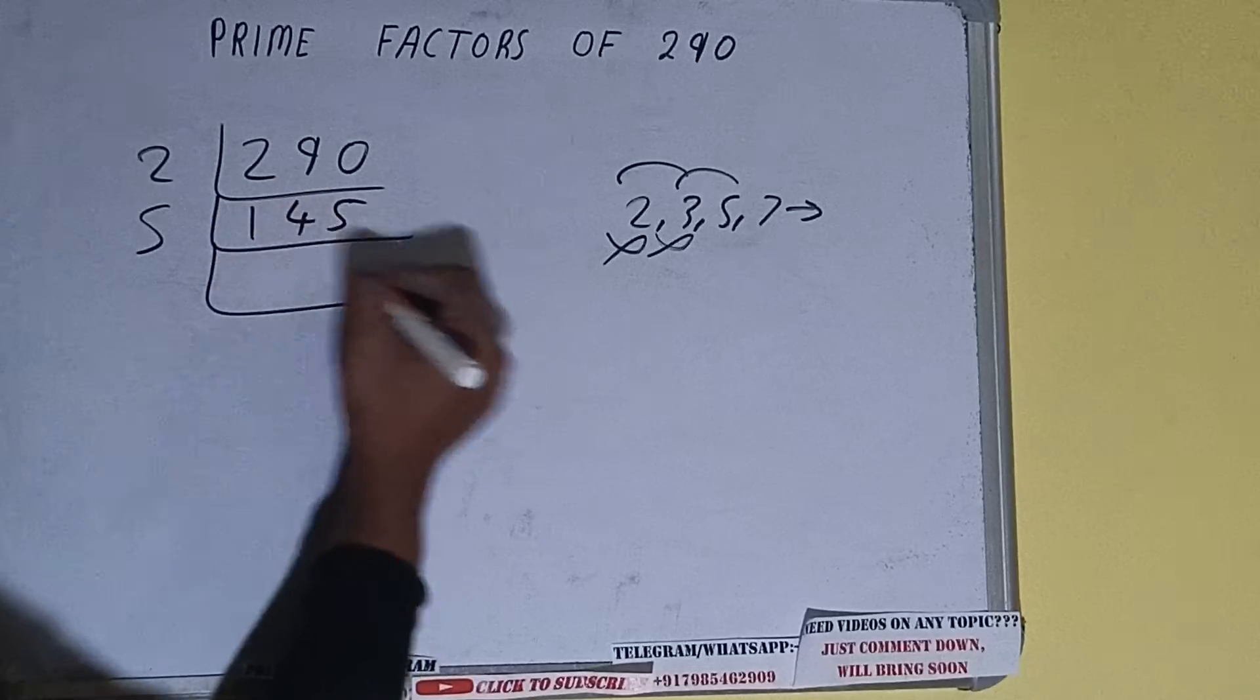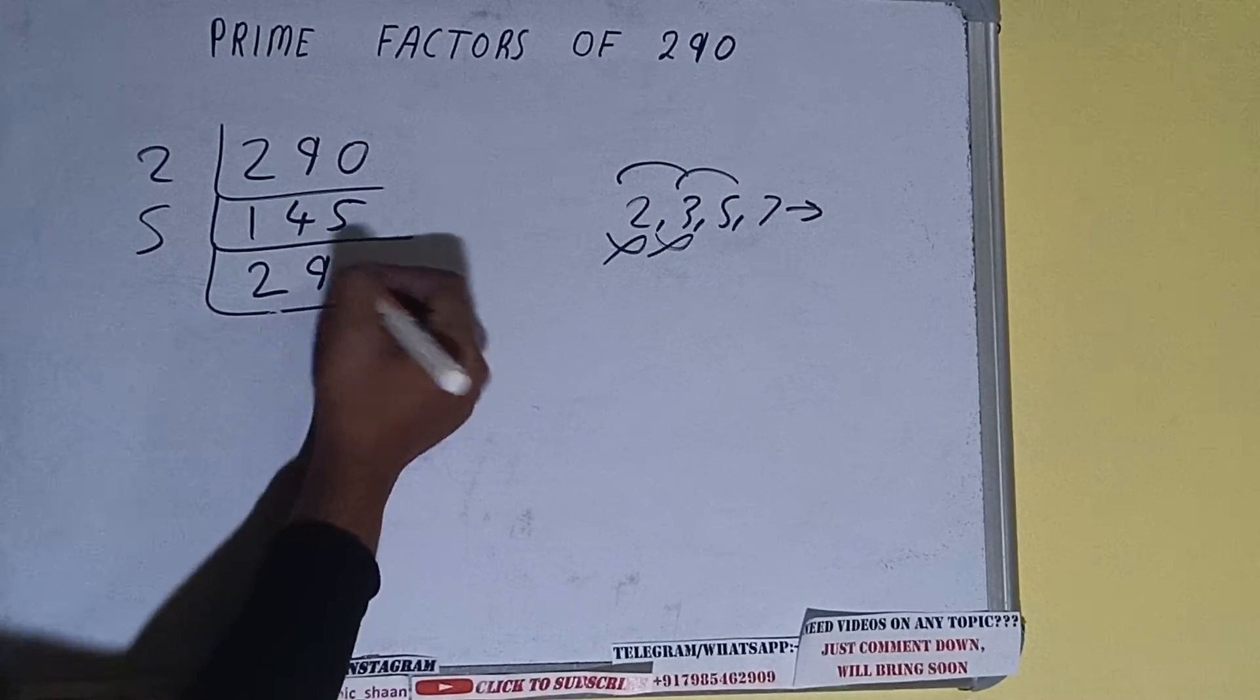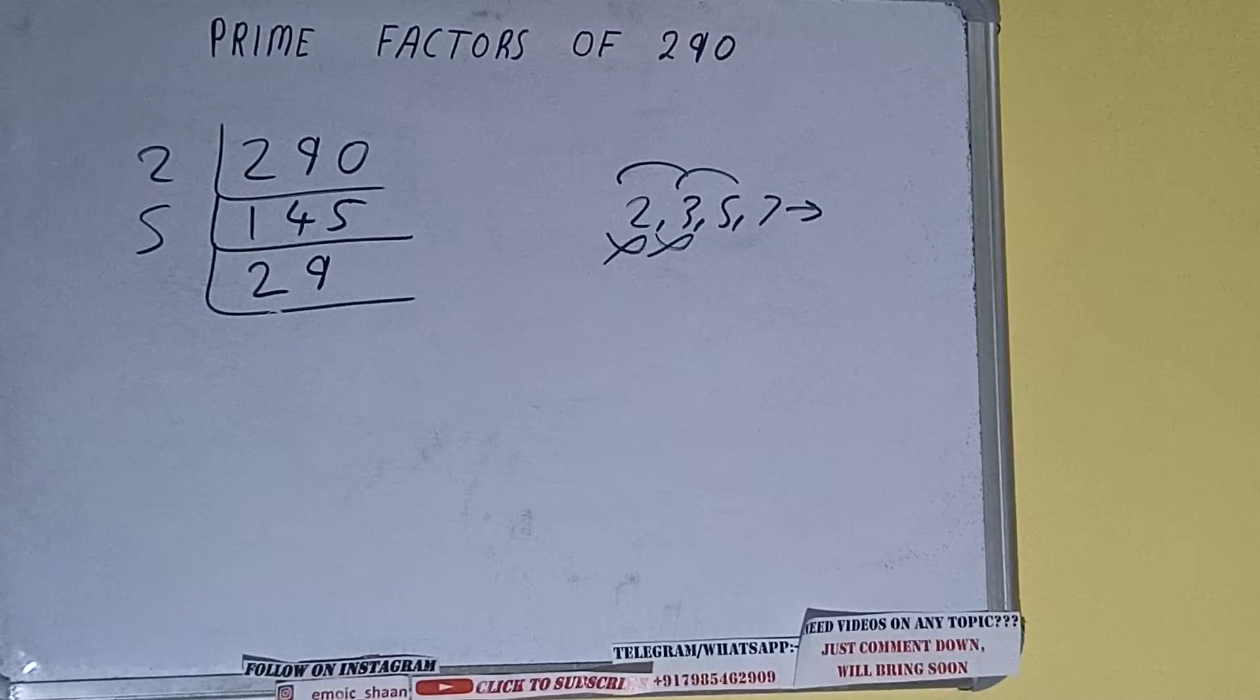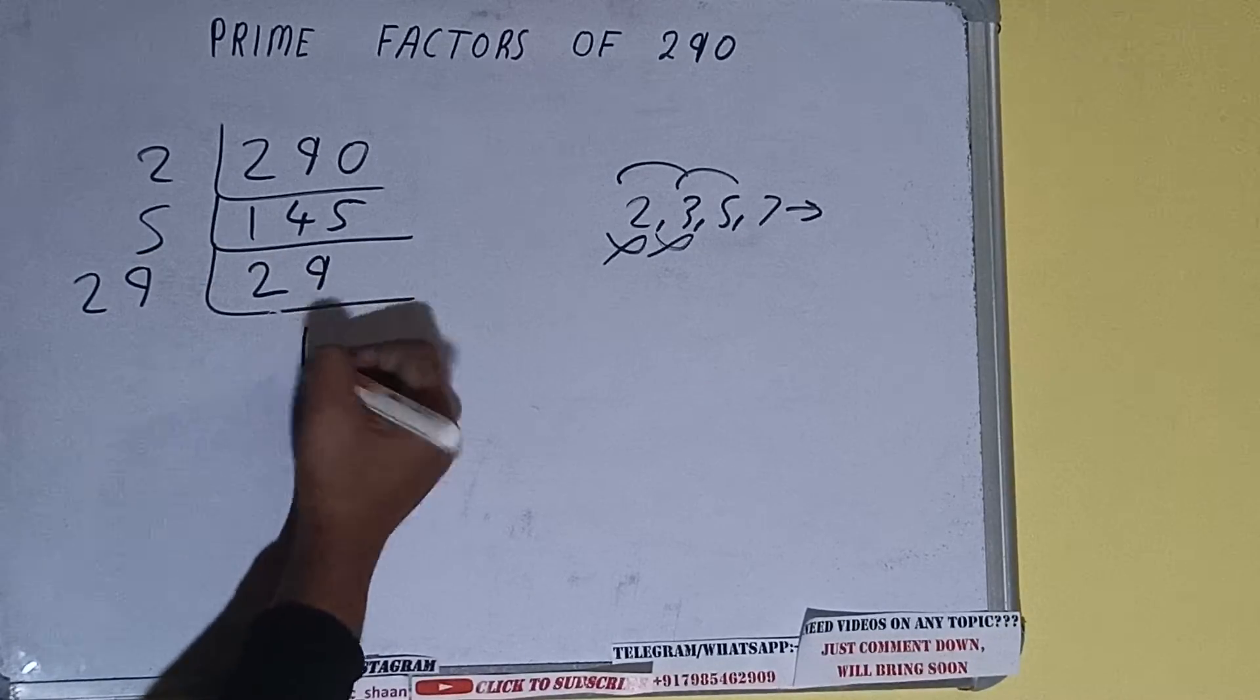And we'll be having... 5 twos are 10, 45... 5 nines are 45... we'll be having 29. And 29 is further not divisible by 5, and 29 is also a prime number, so it is only divisible by itself, that is 29. And once we do so, we'll be getting 1.